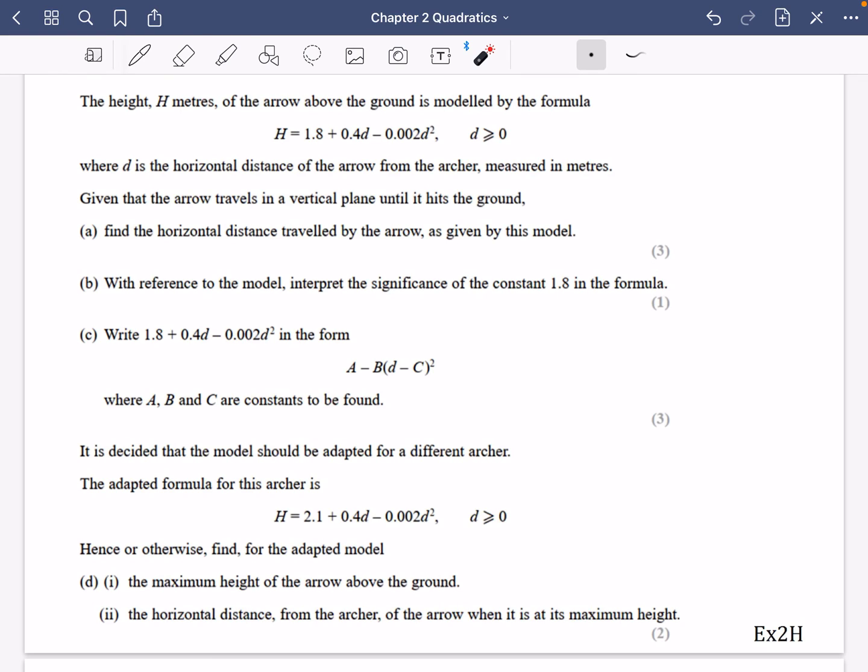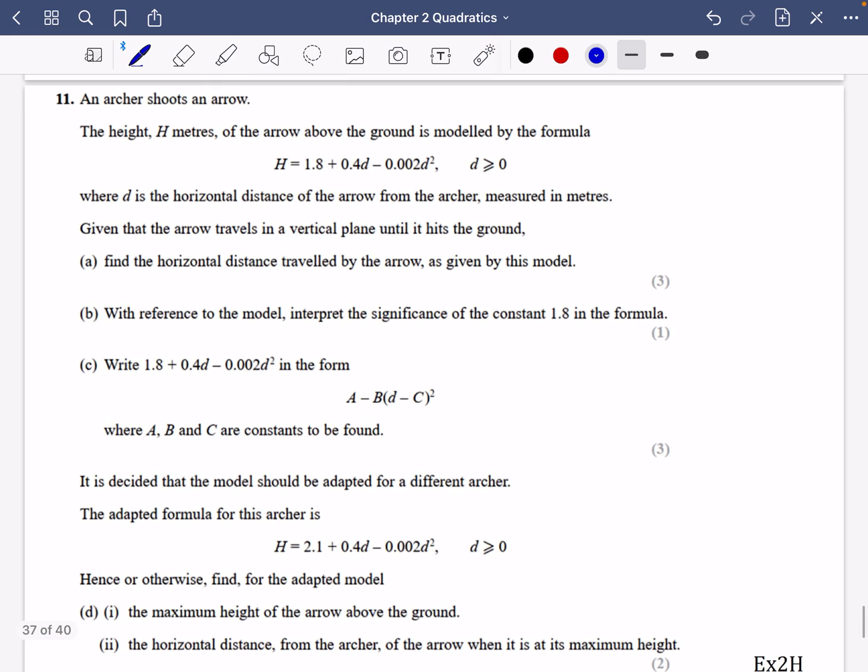Okay, so two exam questions on modeling with quadratics, and you'll find this one is incredibly similar to the one that we've just done. So it says the height h meters of the arrow above the ground. An archer shoots an arrow. The height above the ground is modeled by this formula.